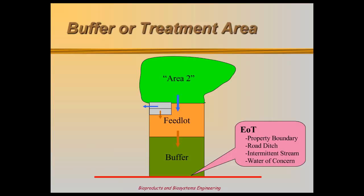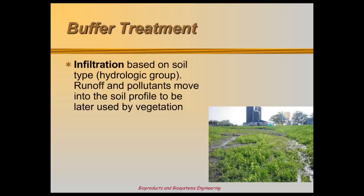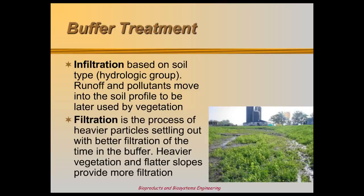After all sources of Area 2 have been entered, MinFarm moves on to the buffer or treatment area. Feedlot runoff crosses the buffer before reaching the end of treatment. The buffer can treat polluted runoff two ways: infiltration and filtration. The amount of infiltration varies based on soil type, while treatment from filtration depends on how long it takes runoff to pass through the buffer. The longer it takes, the better the treatment, provided there's plenty of dense vegetation to help catch and settle out heavier pollutants. Long buffers with dense growth and a shallow grade are much better filters for runoff.